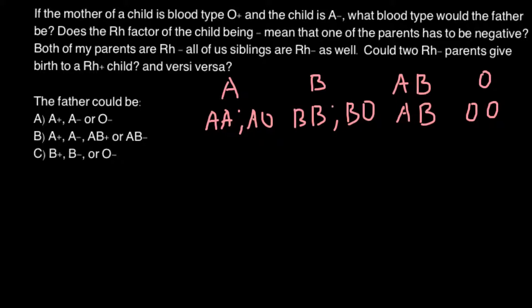It is just a protein — one of the important proteins that can be found on the surface of red blood cells. This is another important characteristic of blood for blood transfusion. This protein can be found on the surface of red blood cells, or it can be absent.